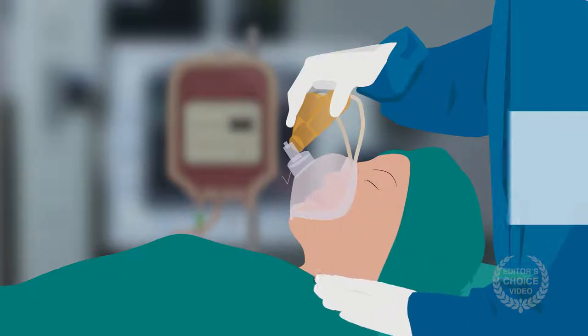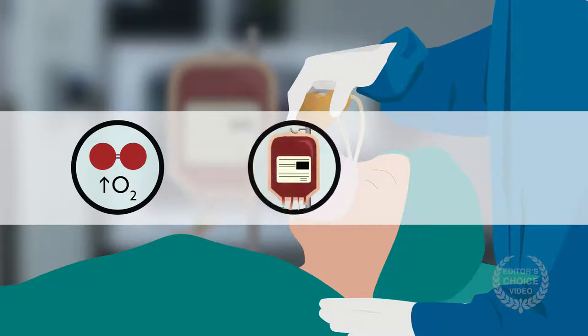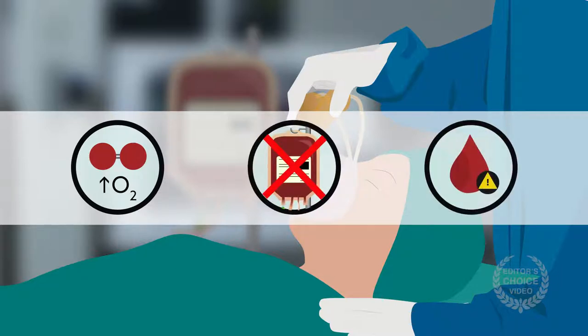There are no specific treatments for TRALI, but as soon as it's suspected, supportive care, such as oxygen, can be given. Any ongoing transfusions should be stopped, and the blood bank should be notified so they can assist in preventing additional injury to the patient.